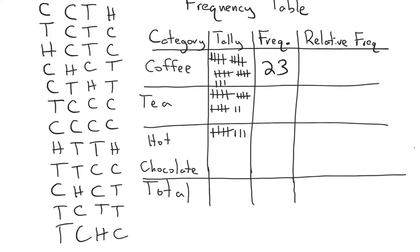For tea drinkers, we tallied up seventeen, and for hot chocolate drinkers, there were eight. So twenty-three people liked coffee the best, seventeen liked tea the best, and eight liked hot chocolate. In the total column, we don't need tallies — we can just put an X through that. But we can total the frequencies: twenty-three plus seventeen plus eight is forty-eight, which makes sense — there are indeed forty-eight data points in our sample.